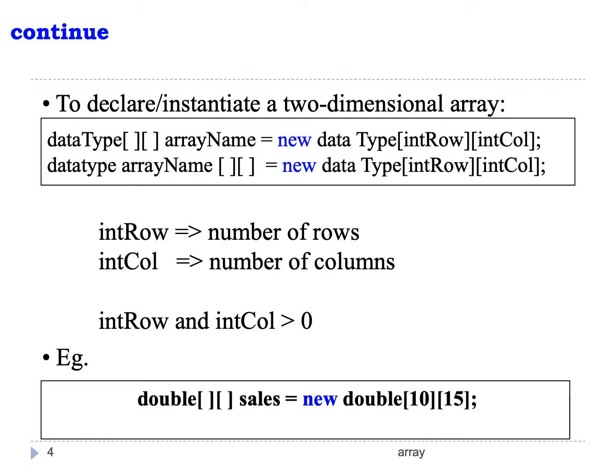To declare and instantiate a two-dimensional array, we can write it as data type, square bracket, and then another square bracket, array name, equal to new data type — where the first square bracket refers to the row and the second square bracket refers to the column. For example, we can have double square brackets, array named sales, equal to new double, with the first square bracket having value 10 and the second square bracket the value 15, giving us 10 rows and 15 columns.